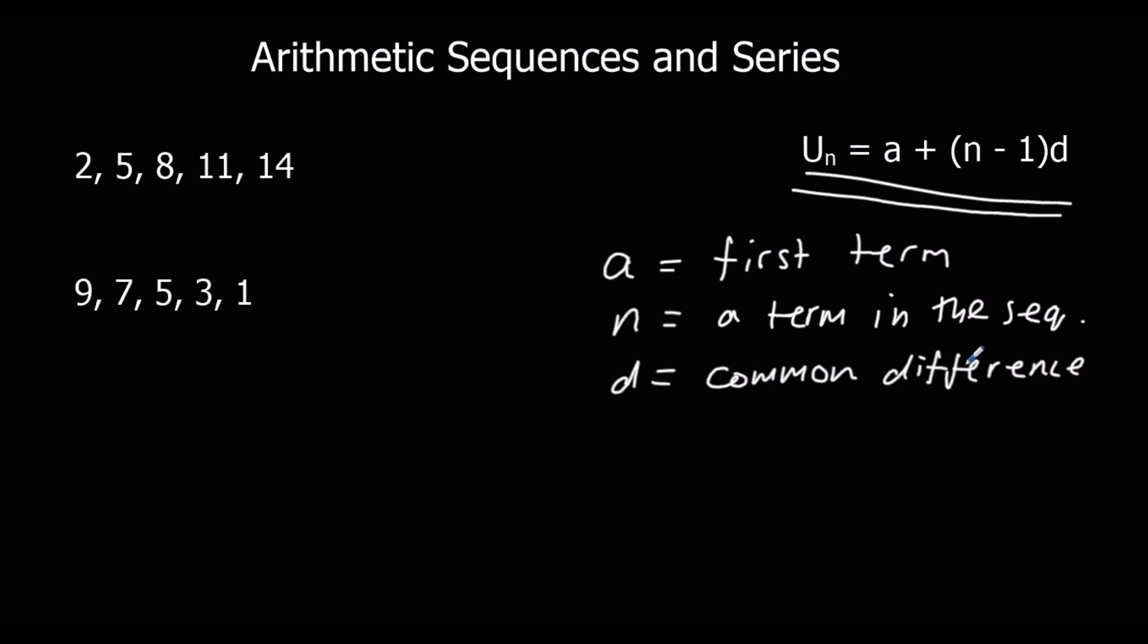Looking at the first sequence over here, a would be 2, because it's the first term. And d, the common difference, is 3. The first term is 2, and it goes up in threes. So for this sequence, un is 2, plus n minus 1, times 3.